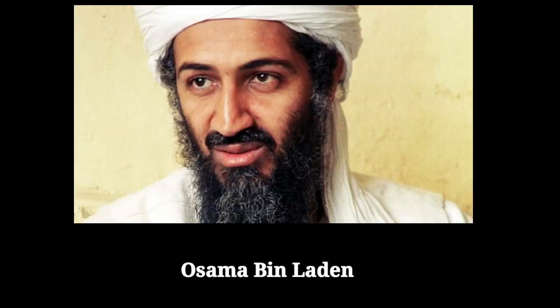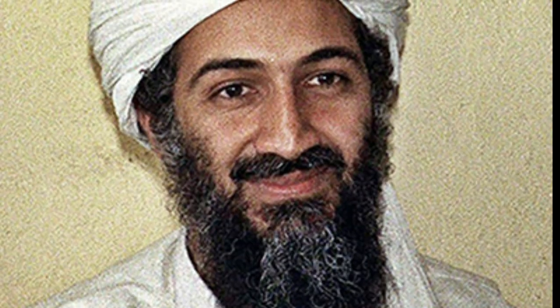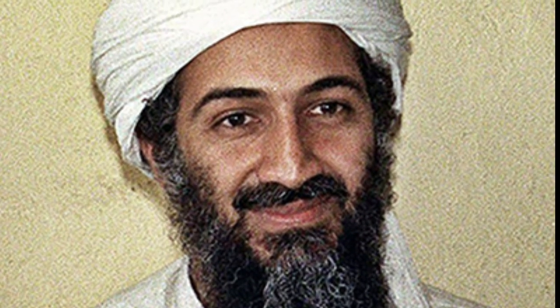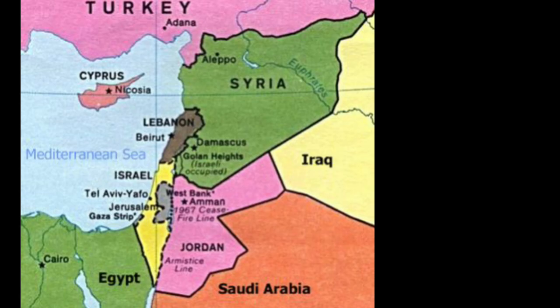Bin Laden was also recognised by the CIA as an American enemy at this time. He deeply resented American involvement in the Middle East and organised a number of bombing campaigns against it. His location had actually been identified on a number of occasions, but Clinton refused to authorise strikes as the level of civilian casualties could not be known for certain.